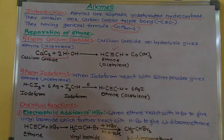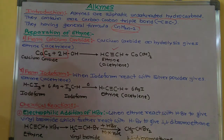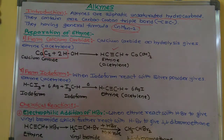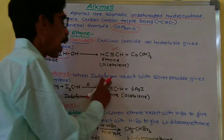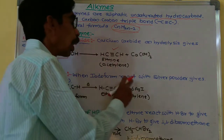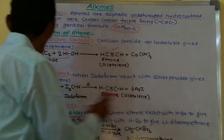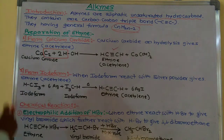Now the second method: from chloroform. When chloroform reacted with silver powder, ethyne is produced.